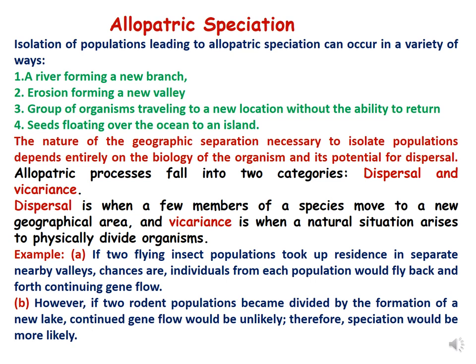Allopatric processes fall into two categories: dispersal and vicariance. Dispersal is when a few members of a species move to a new geographical area. Vicariance is when a natural situation arises to physically divide organisms. For example, if two flying insect populations took up residence in separate nearby valleys, individuals from each population would fly back and continue gene flow. But if two rodent populations become divided by the formation of a new lake, continued gene flow is unlikely and speciation would occur because of the physical barrier.